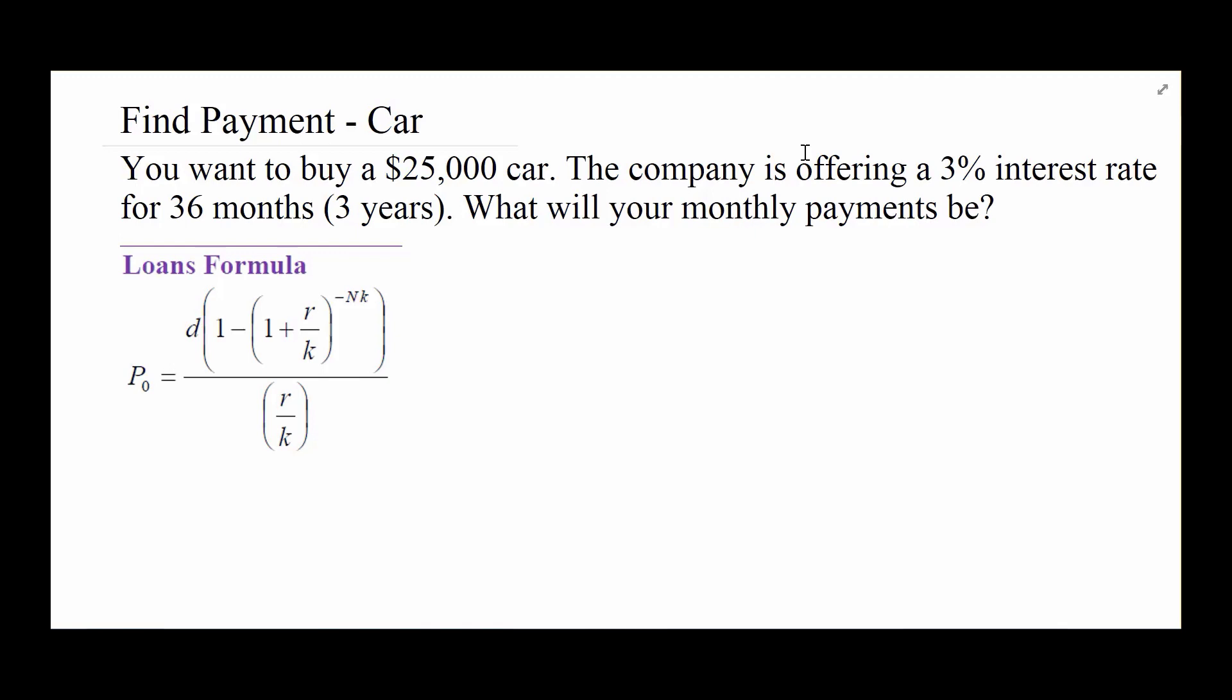It's exactly the same thing. The only difference is the money is going in the opposite direction. Instead of the bank holding your money and giving you interest as you take money out, it's going the other direction. You're holding the bank's money. The bank gives you a bunch of money, and you are slowly paying it back, but they're charging you interest. It's literally the exact same thing as long as we identify that the D is the payment amount and the P sub-zero is the loan amount.